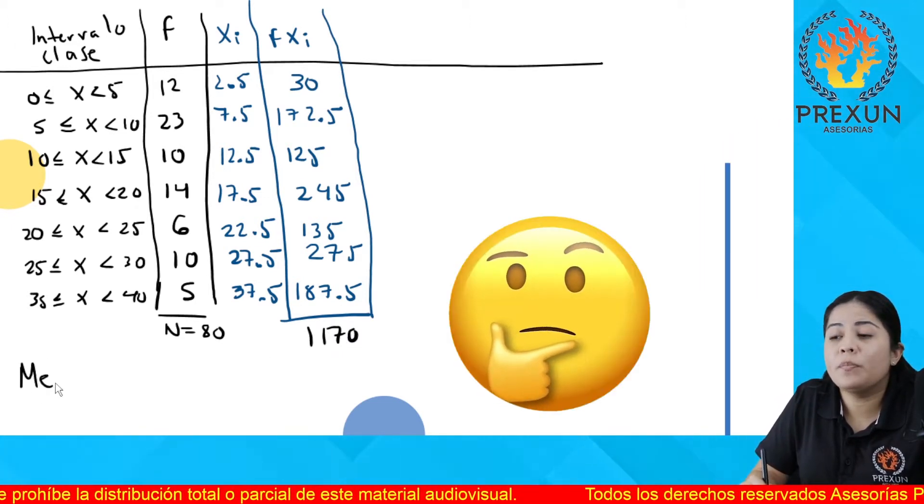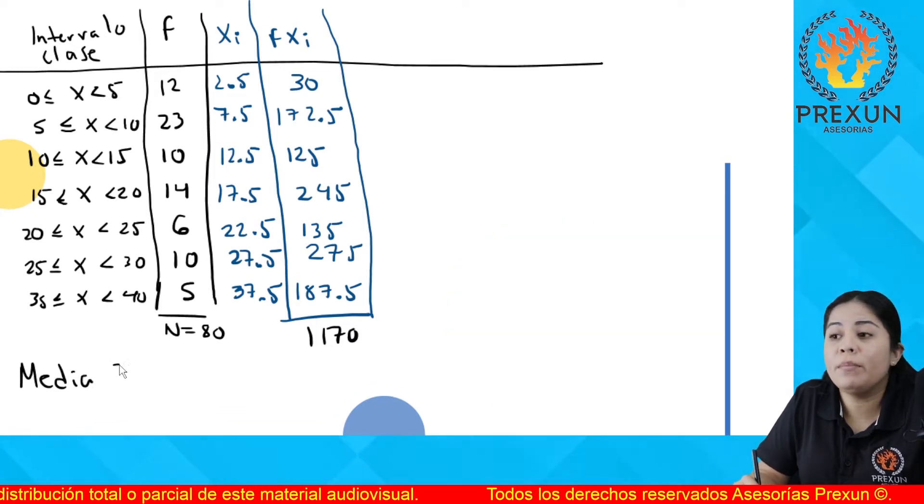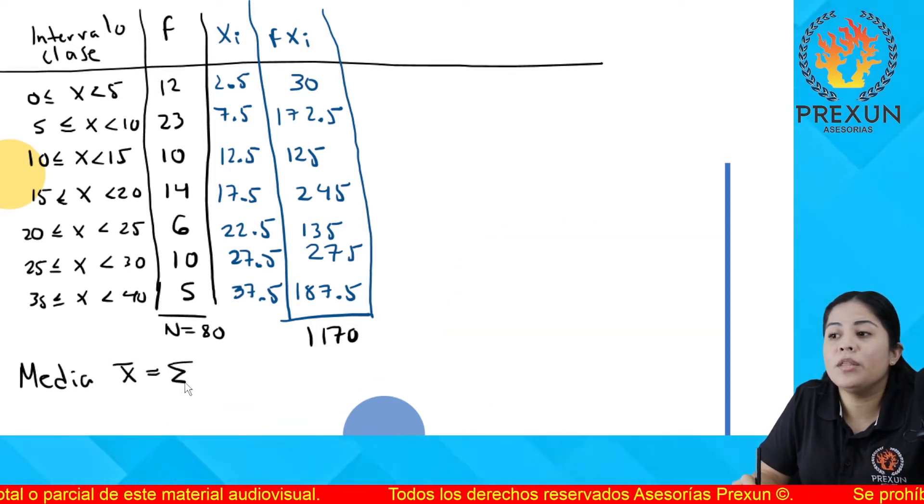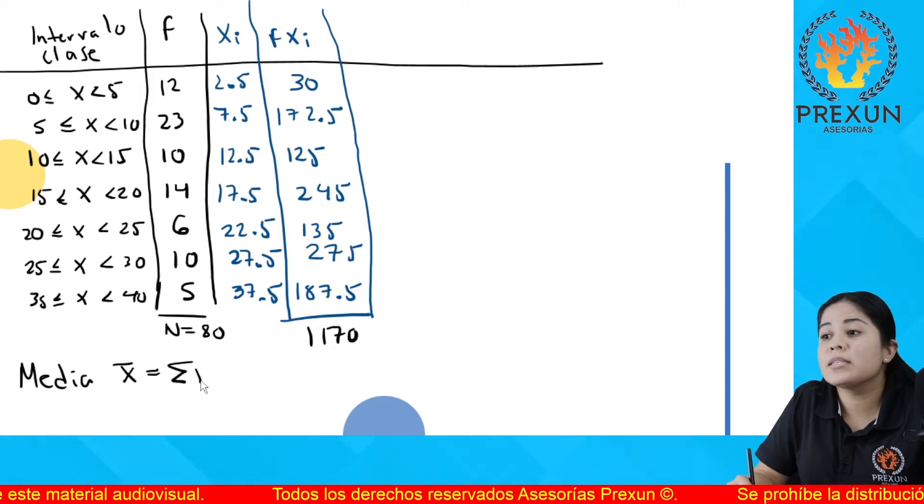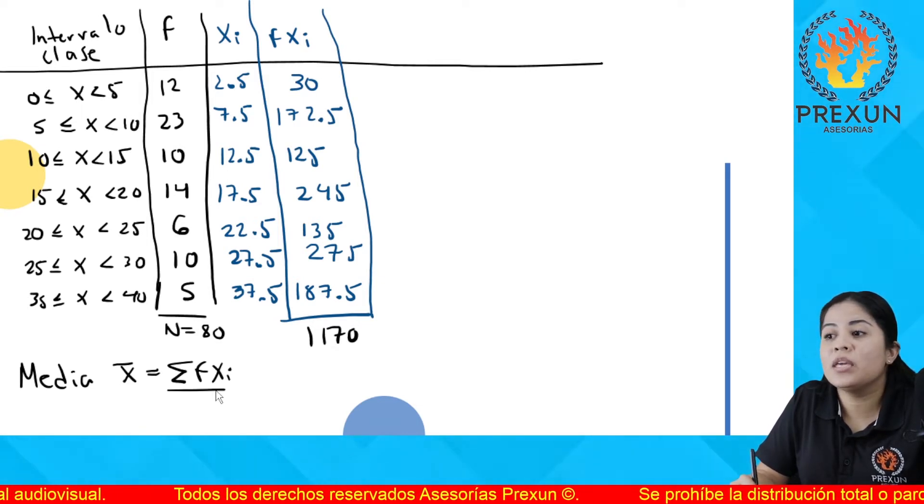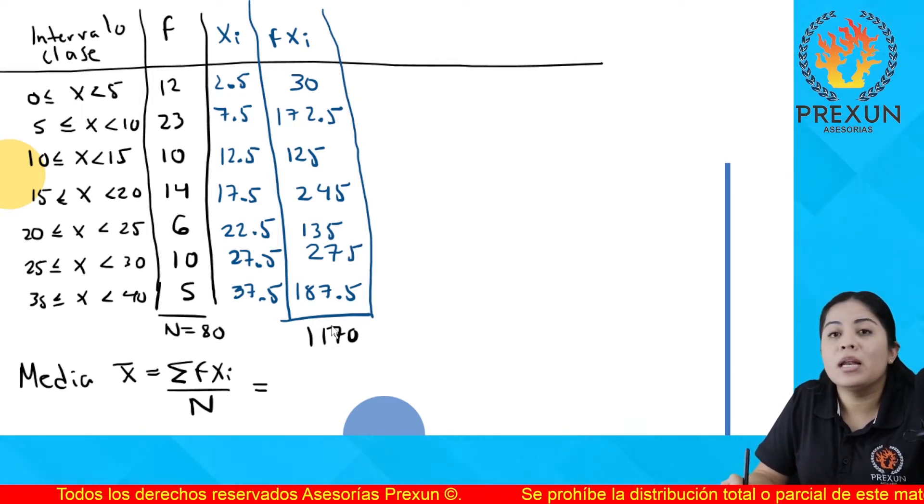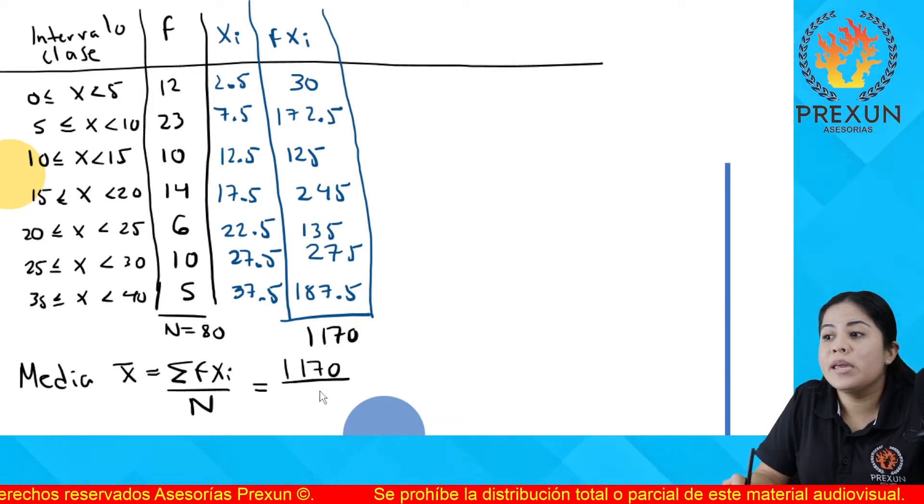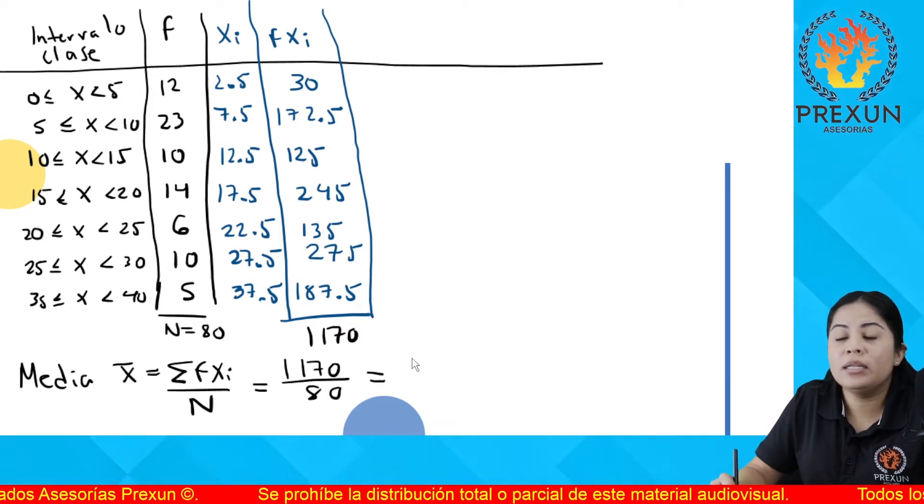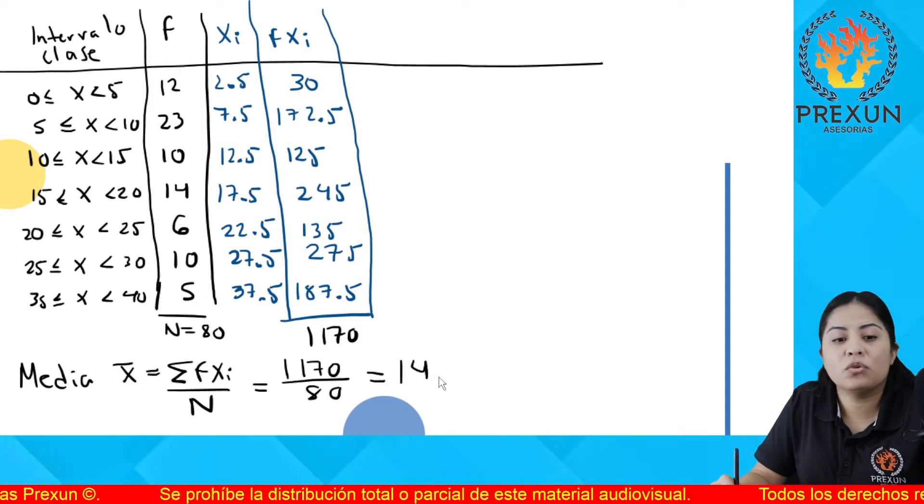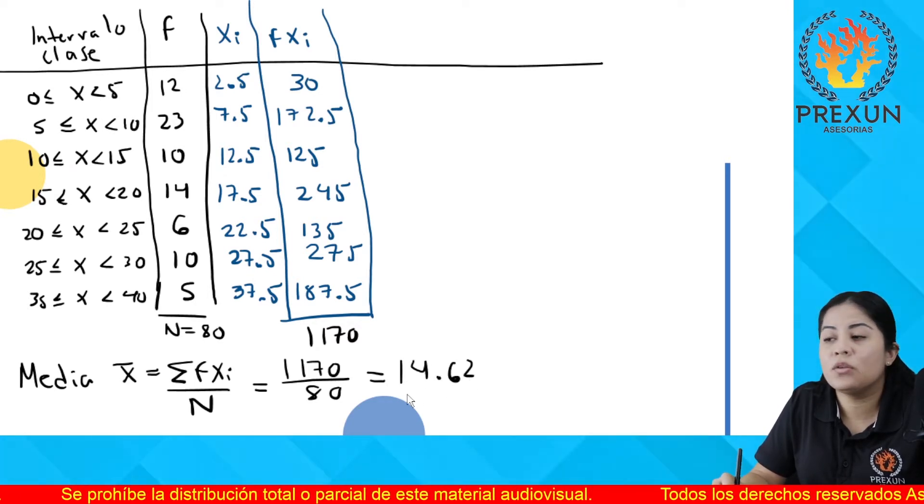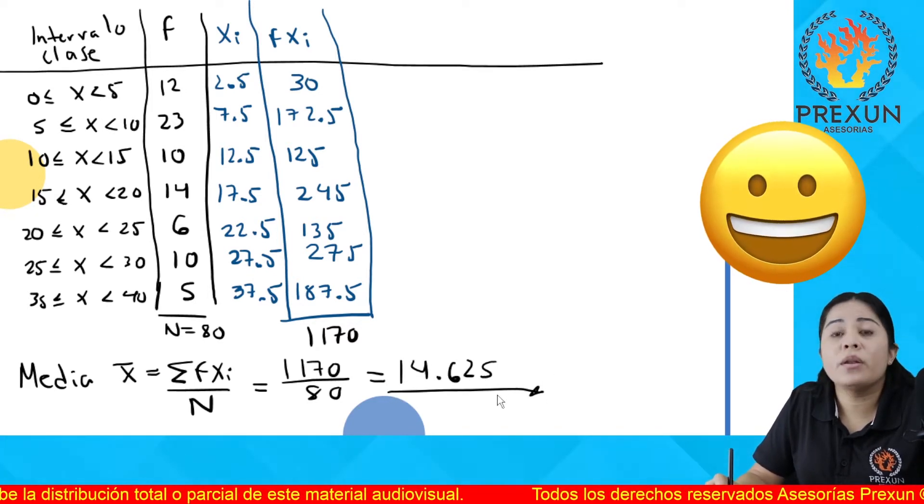¿Para qué las voy a sumar? Porque con este resultado obtengo la media, lo que es equivalente al promedio para estos datos agrupados, que es la sumatoria de Fx sub i entre n. La sumatoria nos dieron 1170 entre 80. Al dividir esto nos da 14.62. Este es el resultado de nuestra media, uno de los datos que nos están pidiendo.